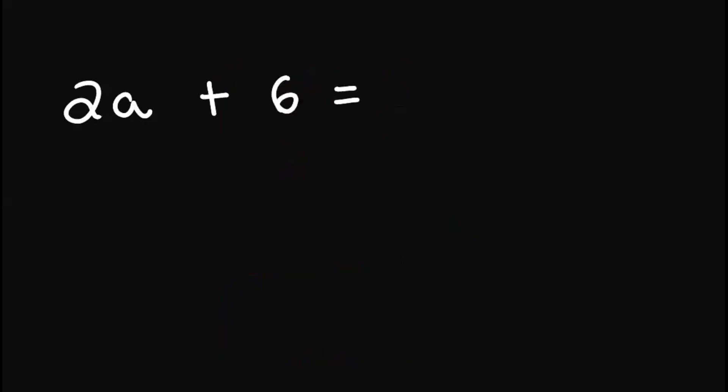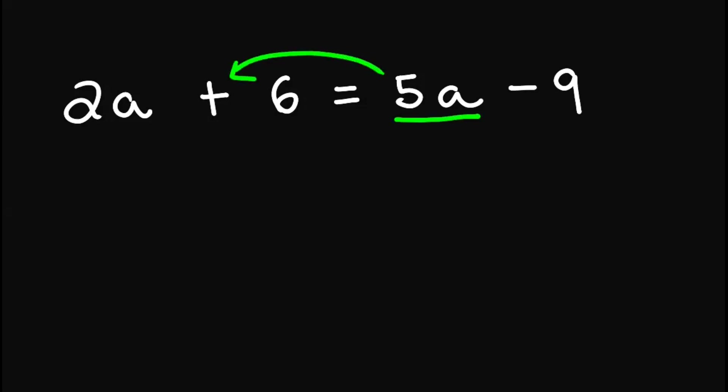So let's have this one: 2a plus 6 equals 5a minus 9. Again, our goal is to isolate a to one side and all the others on the other side. So what we can do here is move 5a to the left and move 6 to the right.